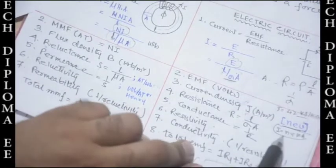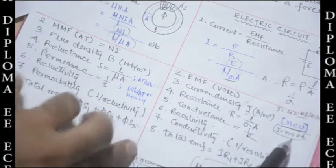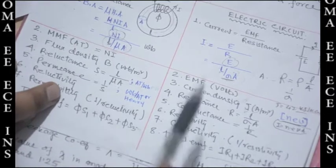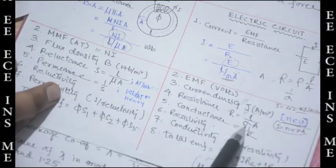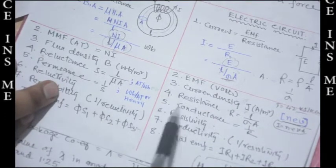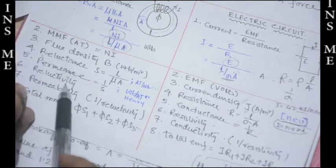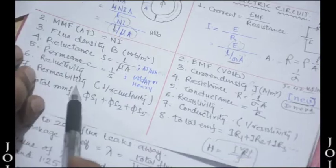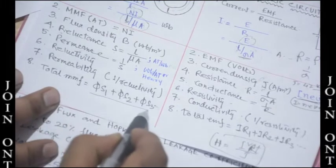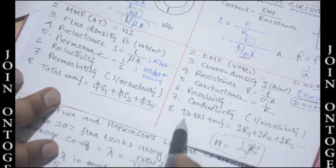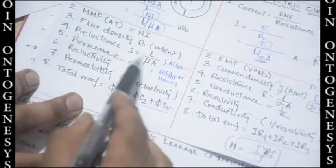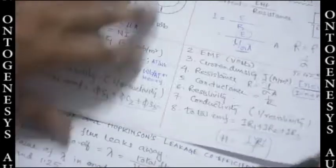Reluctance S = L / (μA) and resistance R = L / (σA), where conductivity corresponds to permeability. Permeance is 1/S (one over reluctance) and conductance is 1/R (one over resistance). Reluctivity corresponds to resistivity, and permeability to conductivity. Total MMF = phi · (S₁ + S₂ + S₃) and total EMF = I · (R₁ + R₂ + R₃). S is reluctance, R is resistance.